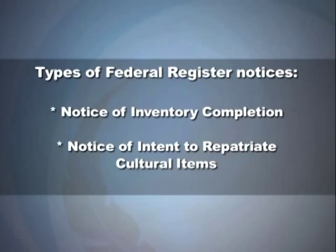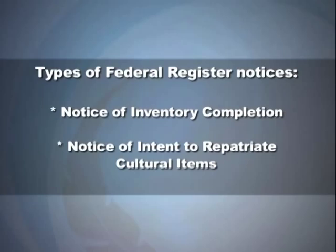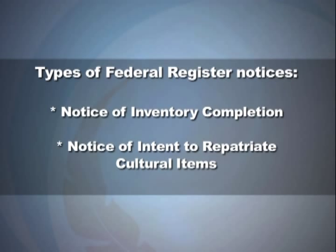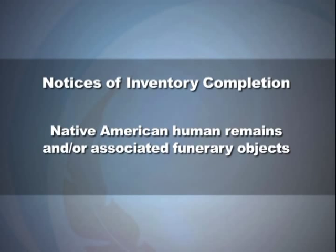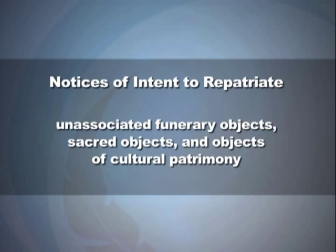There are two types of Federal Register notices: Notice of Inventory Completion and Notice of Intent to Repatriate Cultural Items. Notices of Inventory Completion deal with Native American human remains and associated funerary objects. Notices of Intent to Repatriate deal with unassociated funerary objects, sacred objects, and objects of cultural patrimony.